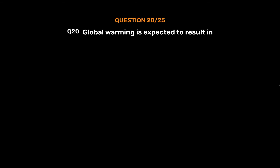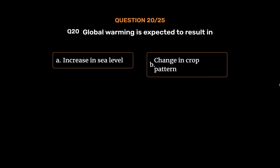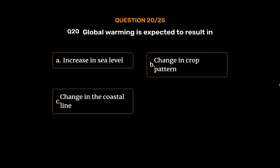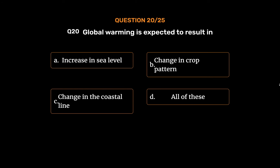Question No. 20. Global warming is expected to result in: Option A: Increase in sea level. Option B: Change in crop pattern. Option C: Change in the coastal line. Option D: All of these.